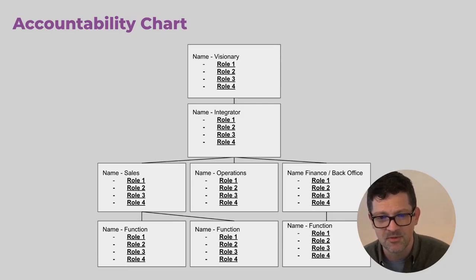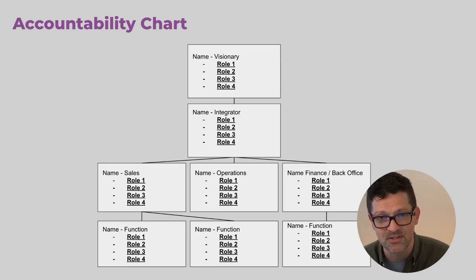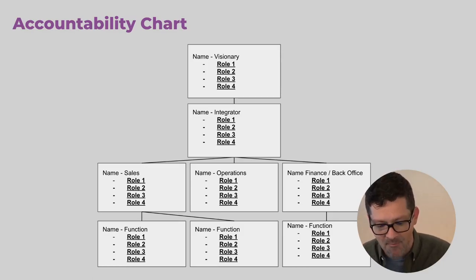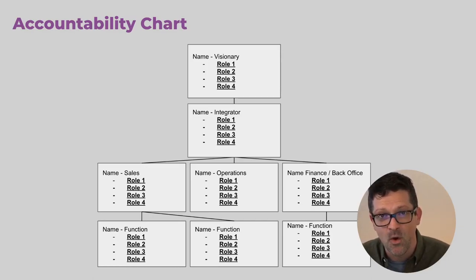I love the simplicity and clarity of this, and I specifically love all of the different roles that each box captures — that each person is fully accountable for. These are the different places where we can focus on how AI can help with automation. Really simplifying down so that each person or each box is responsible and accountable for three to four roles — this is going to be a complete map of different automation processes that we can focus on while implementing AI into your organization.